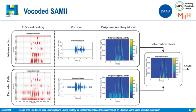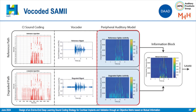Because we are evaluating a sound-coding strategy for cochlear implants, we incorporated a vocoder to transform electrodograms into audio that simulates electrical hearing. In this image, a visual presentation of how the signal looks at various stages can be seen: starting with the electrodograms, then the audio equivalent to the electrical hearing, then the neural activity for different frequencies, the reference path, the degraded signal path, and finally the mutual information used to compute SAMI.